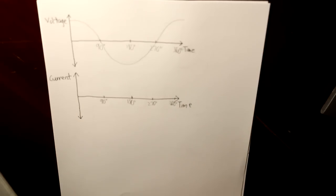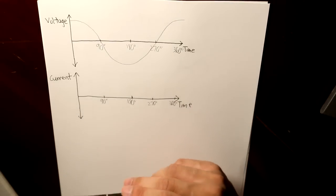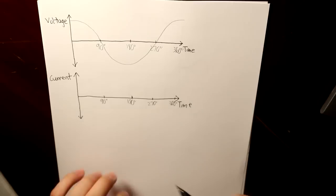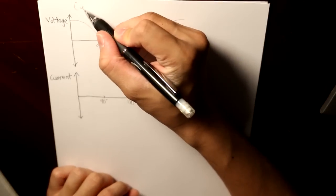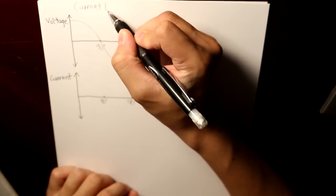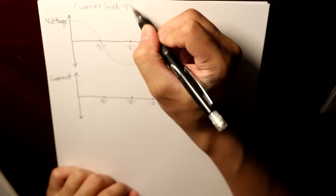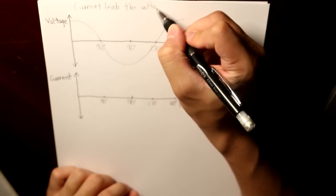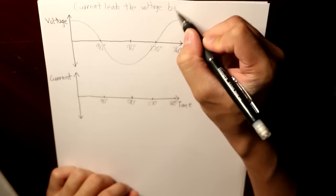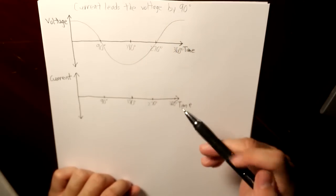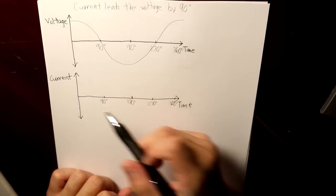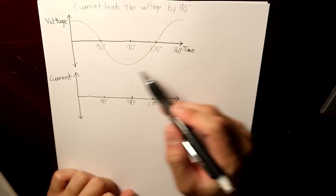And now the question is, how is the current going to behave? Well, simply, with an inductor, current leads the voltage by 90 degrees. So this is how the current is going to look like if the voltage behaves like this.